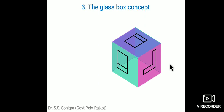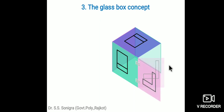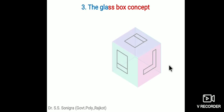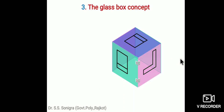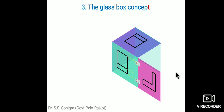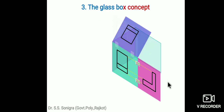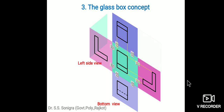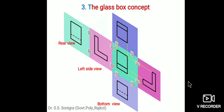The third concept is the glass box concept. We assume the object is inside a box of glass. We open all faces of this glass box after drawing the object on each side, giving us: front view, top view, bottom view, left-hand side view, right-hand side view, and a rear view.